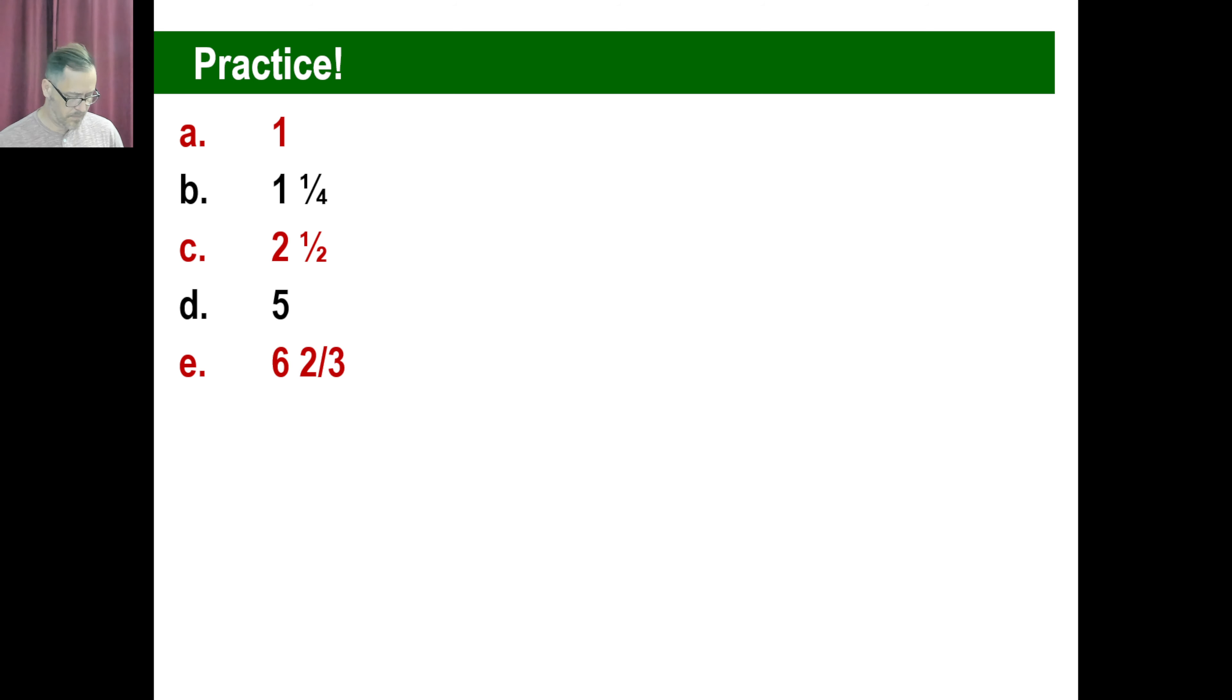Pause it and try F. It's going to be five and one-fourth. Pause it and try G. G will be ten-thirds times five-thirds. That is fifty over nine, which is five and then five left over. Five and five-ninths.